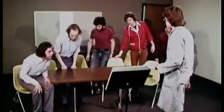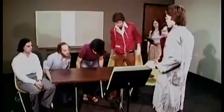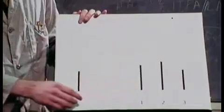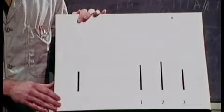The Asch experiment is one of psychology's oldest and most popular pieces of research. A volunteer is told that he's taking part in a visual perception test. What he doesn't know is that the other participants are actors, and he's the only person taking part in the real test, which is actually about group conformity.